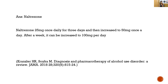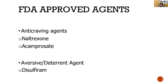When selecting anti-craving agents, we consider liver profile, renal profile, and affordability. If everything is normal with no general medical condition issues, the most preferred drug based on recent randomized controlled trials for alcohol use disorder is naltrexone, because it works on the reward pathway — the key pathway for dependence and craving. FDA-approved anti-craving agents are naltrexone and acamprosate; the aversive agent is disulfiram, covered in the next session.